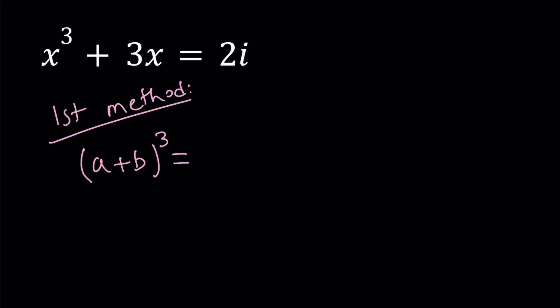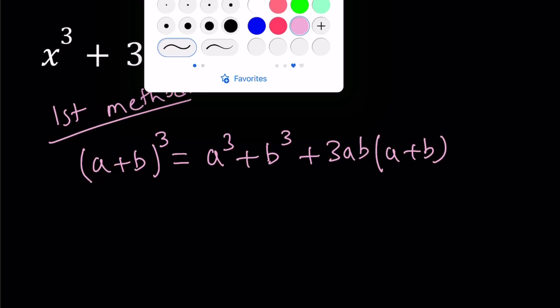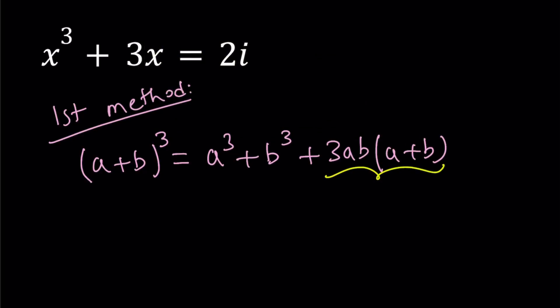We're going to cube a plus b and that's going to give us a cubed plus 3a squared b, and so on and so forth. But I want to write it in a more compact form. You can write this as a cubed plus b cubed plus 3ab times a plus b. It's kind of nice because I can take this term here and move it to the left. So a plus b quantity cubed minus 3ab times a plus b equals a cubed plus b cubed.